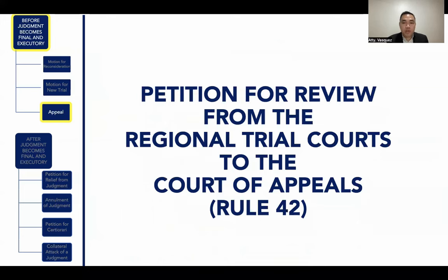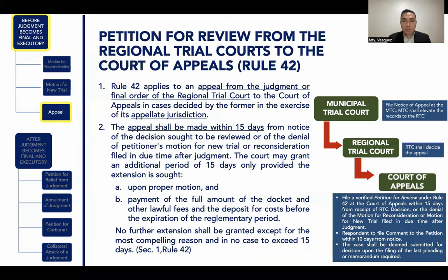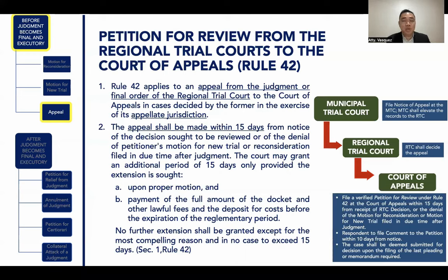Rule 42 applies to an appeal from the judgment or final order of the Regional Trial Court to the Court of Appeals in cases decided by the RTC in the exercise of its appellate jurisdiction. Rule 42 presupposes that a case was originally filed at the Municipal Trial Court, appealed to the Regional Trial Court, and the decision of the RTC is now subject to appeal at the Court of Appeals, which is why you need to file a petition for review under Rule 42.